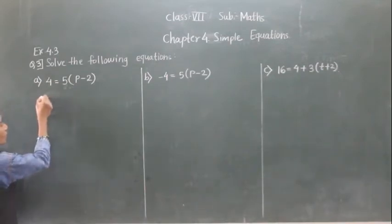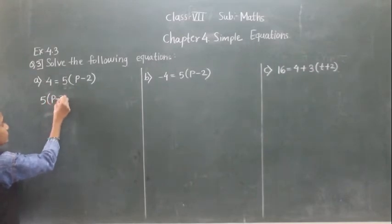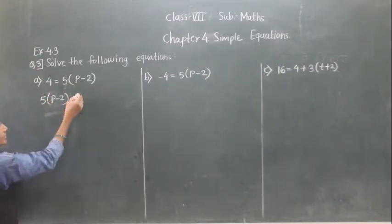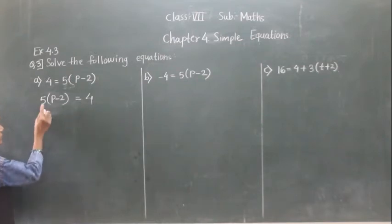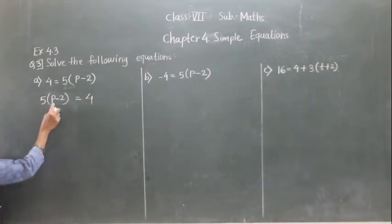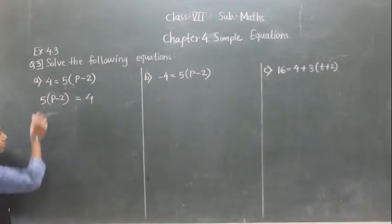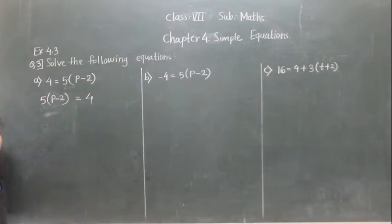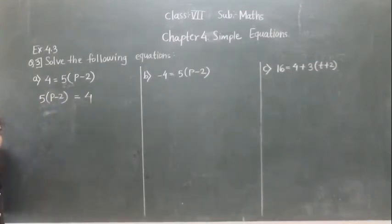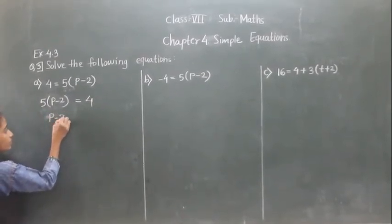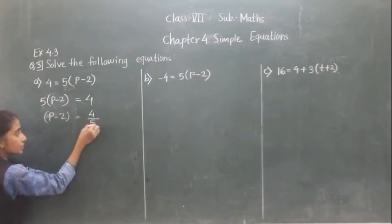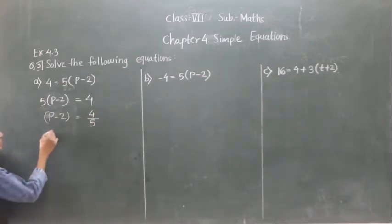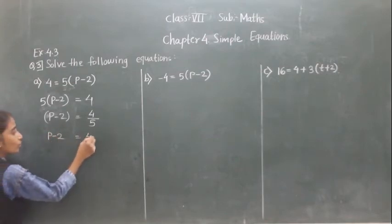You can also solve this example another way. Take 5 into bracket P minus 2 and transfer 5 to the right hand side. Since 5 is multiplication, if it comes to the right hand side it will become division. So P minus 2 is equal to 4 upon 5.